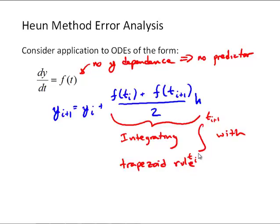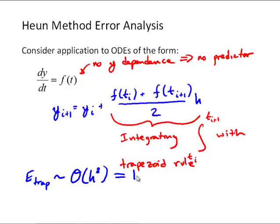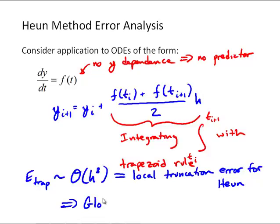We'll use that to figure out what the error is. Recall that the error for the trapezoid rule is on the order of h cubed, and that's going to be the local truncation error with each time step for Heun's method. So the global error for Heun's method is second-order accurate, since the local error is third-order accurate.